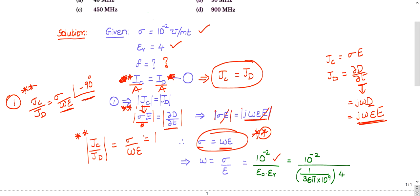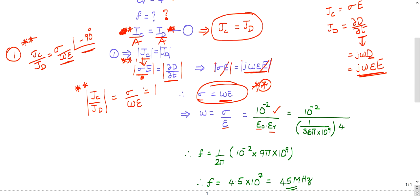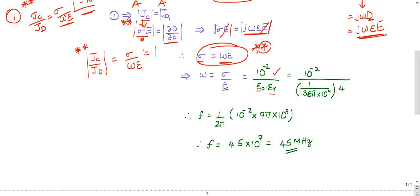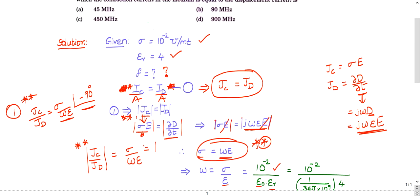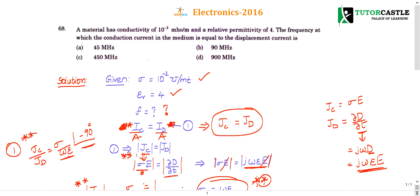Sigma equal to omega epsilon. Omega is nothing but sigma by epsilon. Sigma is given as 10 power minus 2. Epsilon is nothing but epsilon 0 into epsilon r. Epsilon 0 is nothing but 1 by 36 pi into 10 power 9 into 4. Epsilon r is 4. Then if you simplify, you are going to get frequency as 45 megahertz. You can go through the calculations.